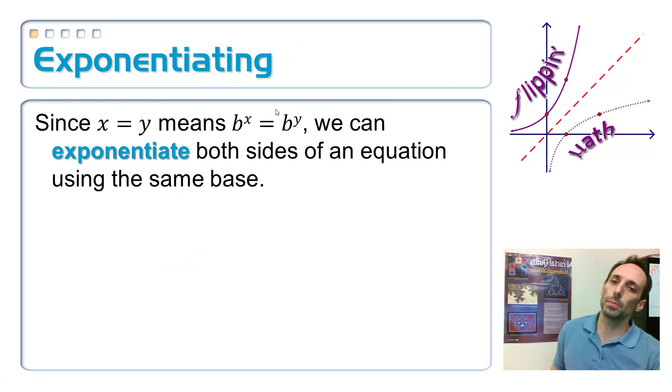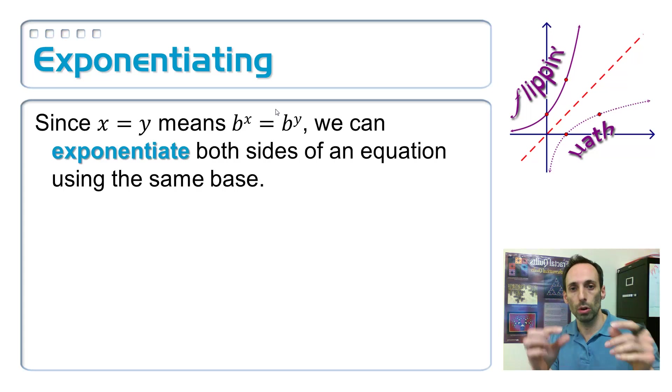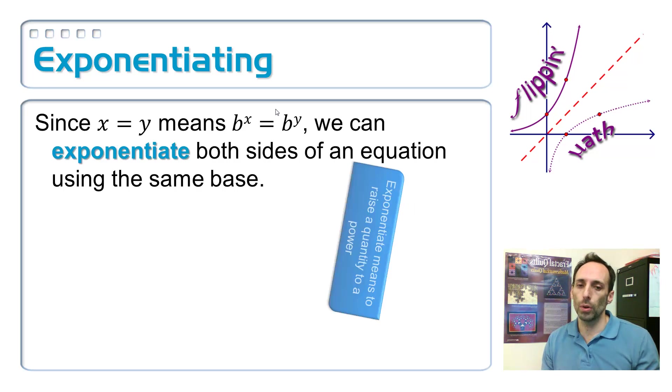Okay. Sometimes that's just impossible. Like, the question was not set up that way and there's no way for me to get one base to look like the other base. So, the next method is what is called exponentiating. Exponentiating means that you raise both sides to a power using the same base.